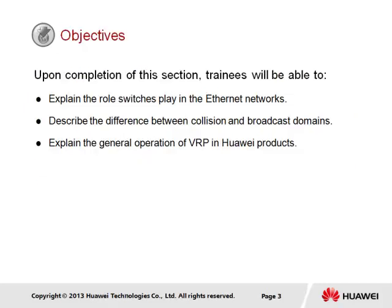Upon completion of this section, it is generally expected that trainees will be able to explain the role switches play in Ethernet networks, describe the difference between collision and broadcast domains, and explain the general operation of VRP within Huawei products.